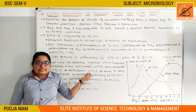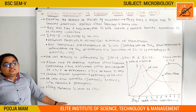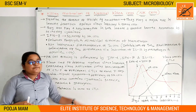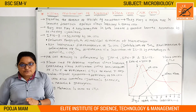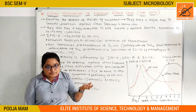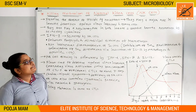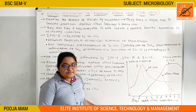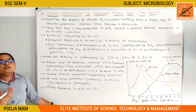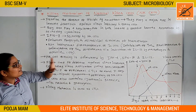Natural killer cells are non-specific. Despite the absence of a specific antigen receptor, they play a major role in the immune defense against virus-infected and tumor cells. They carry out this function without requiring antigen-specific receptors.